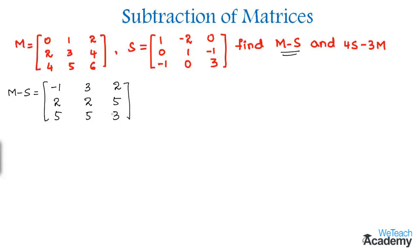And now coming to the next one where we have to subtract 4S minus 3M. So in order to subtract first we need to multiply the scalar 4 with the matrix S.